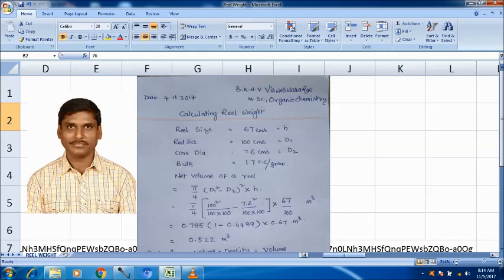Because d1 is 100, pi by 4 into 100 square by 100 into 100 minus 7.6 square by 100 into 100, to convert into meter square.